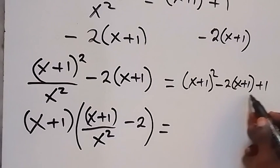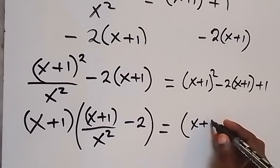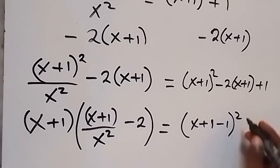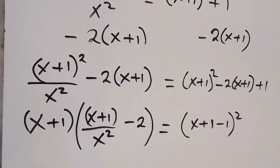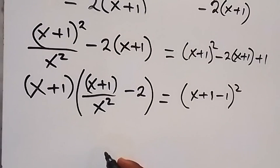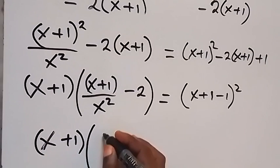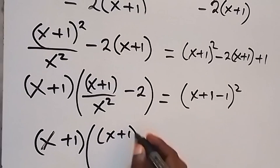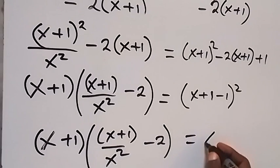Then equals 2. On this side, what we have can be summarized as x plus 1 minus 1, all squared. This expansion will give us something like this back, and plus 1 minus 1 is 0, so we have only x squared left. Then, we can write this as x plus 1 into bracket x plus 1 over x squared minus 2, equals to x squared.